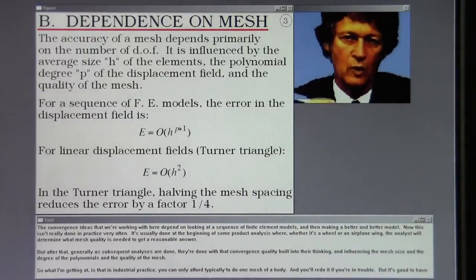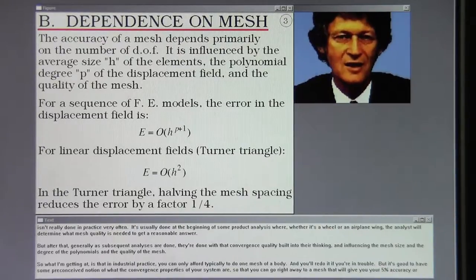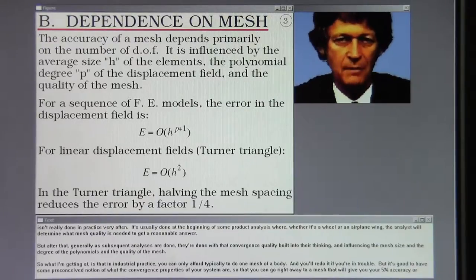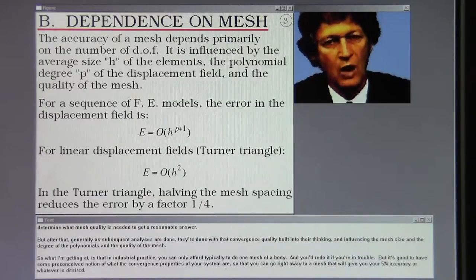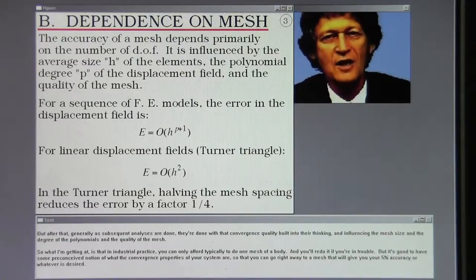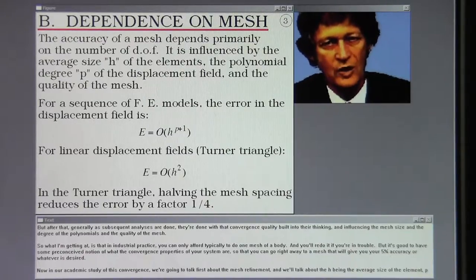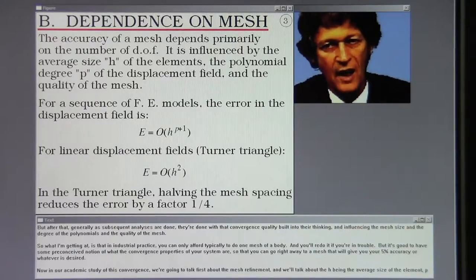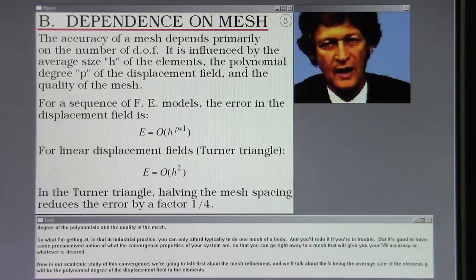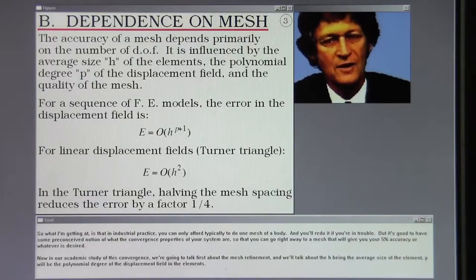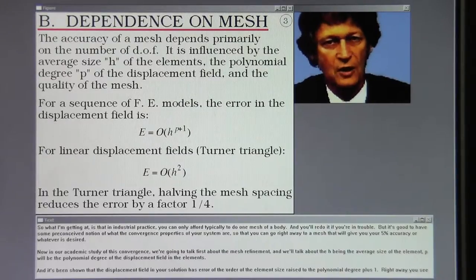The convergence ideas that we're working with here depend on looking at a sequence of finite element models and then making a better and better model. Now this isn't really done in practice very often. It's usually done at the beginning of some product analysis, whether it's a wheel or an airplane wing. The analyst will determine what mesh quality is needed to get a reasonable answer. But after that, generally as subsequent analyses are done, they're done with that convergence quality built into their thinking and influencing the mesh size, the degree of the polynomials, and the quality of the mesh. So what I'm getting at is that in industrial practice, you can only afford typically to do one mesh of a body, and you'll redo it if you're in trouble. But it's good to have some preconceived notion of what the convergence properties of your system are, so that you can go right away to a mesh that will give you your 5% accuracy or whatever is desired.